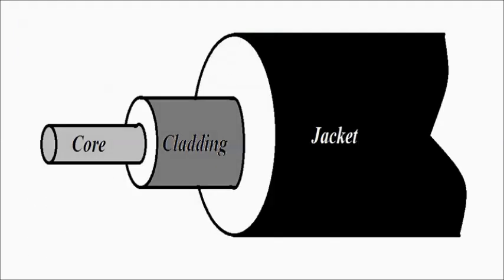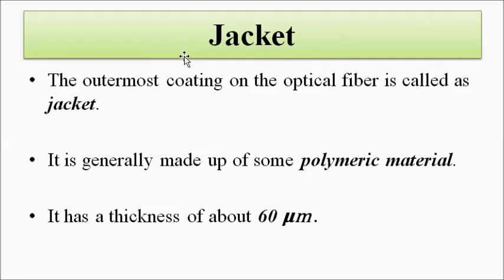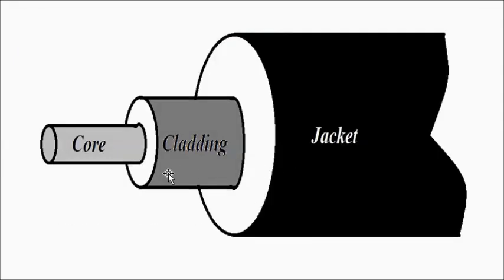Then we have the outermost covering, which is the jacket. This is the outermost coating on the optical fiber. It is made of some polymeric material and has a thickness of generally about 60 micrometers. The main objective of the jacket is to protect the core-cladding combination. Optical fibers are basically installed in very adverse environmental conditions — subjected to extreme temperatures, pressures, and different weather conditions — so the jacket prevents the core-cladding combination from any damage.